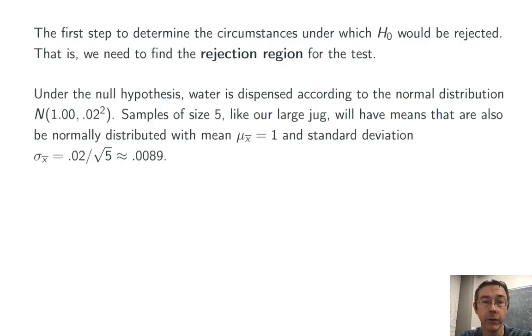Under the null hypothesis, the distribution of the water that it's giving out, the water gallons in air quotes, is going to be normal. That was told to us. With mean 1, that's from the null hypothesis. And standard deviation 0.02. So variance 0.02 squared. That was also given to us. That's just something we know based on the mechanics of the machine.